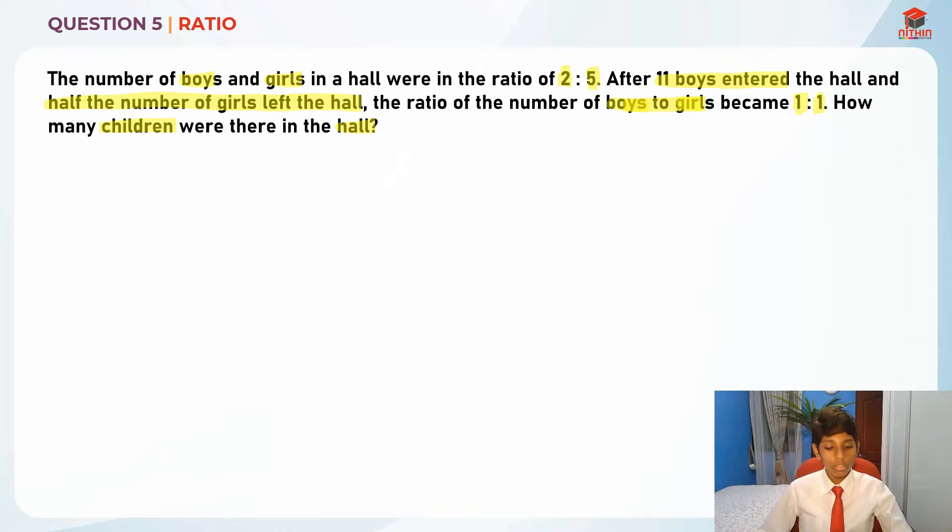So this is actually the question. First of all, the ratio at first was 2 is to 5. After 11 boys entered and half of the girls left, the ratio of boys to girls became 1 is to 1. First, let's take a look at the ratio before.